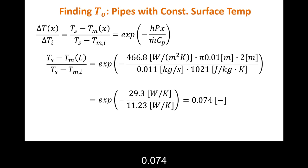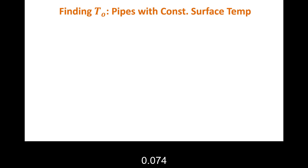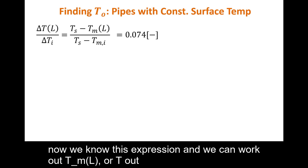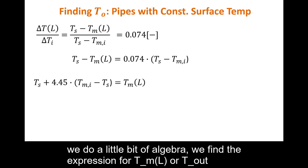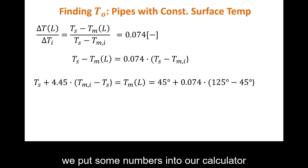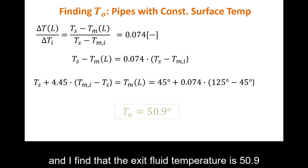Now we know this expression and we can work out T_mL or T out. We do a little bit of algebra. We find the expression for T_mL or T out. We put some numbers into our calculator and I find that the exit fluid temperature is 50.9 degrees.